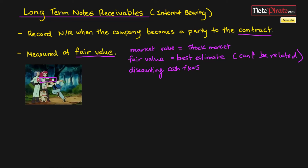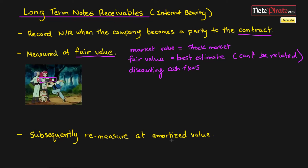The final criterion is that we're going to remeasure the long-term notes receivables at amortized value. So if we have a discount or a premium, that amount is going to be amortized over the life of the note — bit by bit until the date the note matures — with some of the discount or premium being accreted over time. That covers the criteria for recognizing, measuring, and remeasuring a long-term notes receivable.